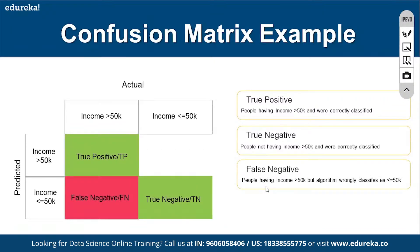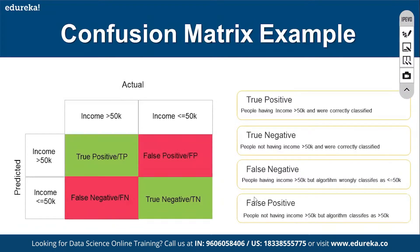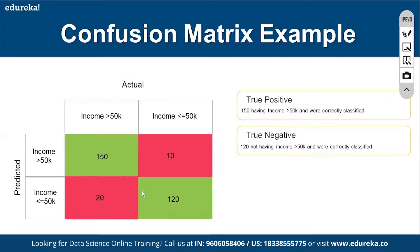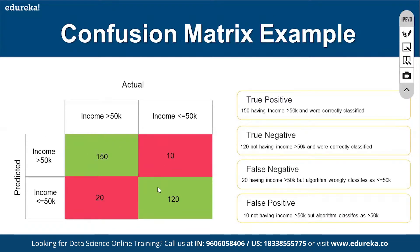False classification means the actual value is greater than 50K but the model incorrectly predicted less than 50K. This matrix gives a count — for example, 150 plus 120 records are correctly classified (270 out of 300), and only 30 records are incorrectly classified, which we call error records.